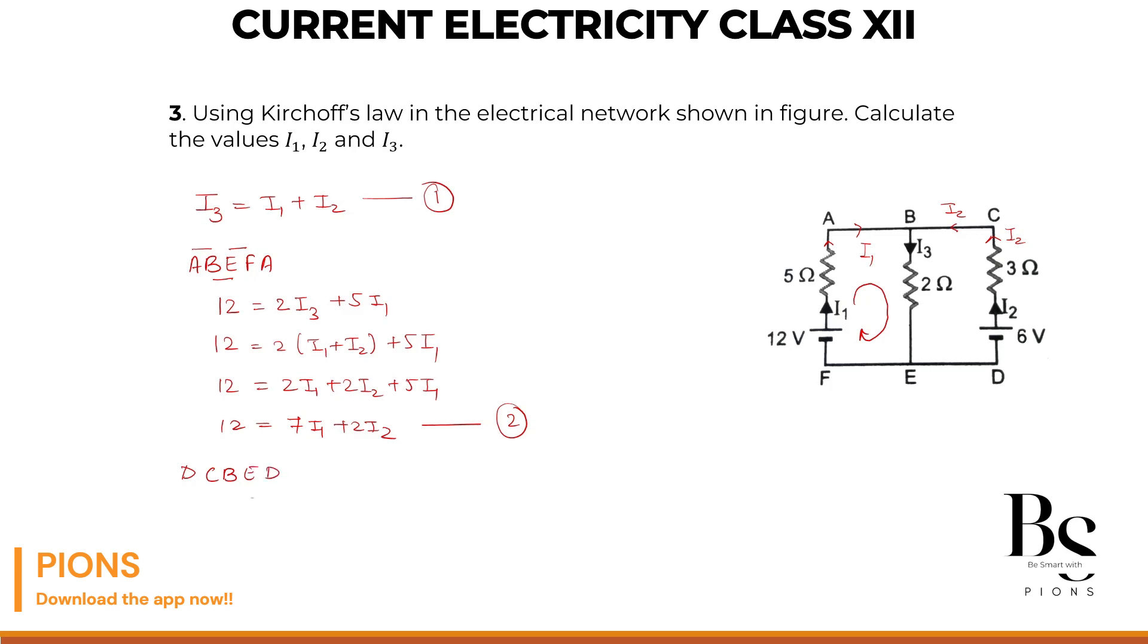That equals to, while going from D to C, there is a 3 Ohm resistor multiplied with current I2. C to B, nothing is there. B to E, 2 Ohm. I am also going B to E, current is also going from B to E, so 2 times I3. E to D is nothing.